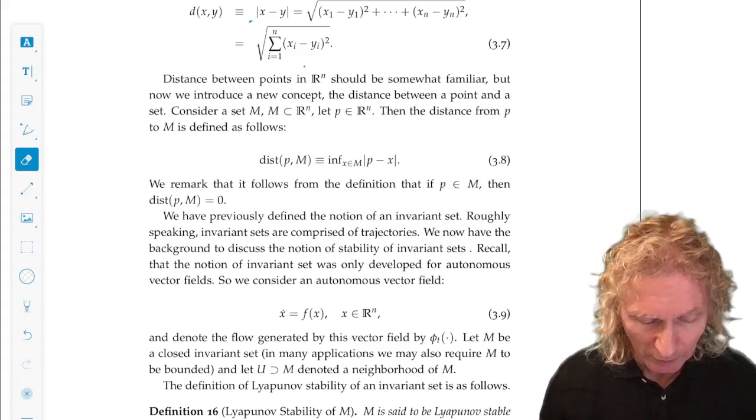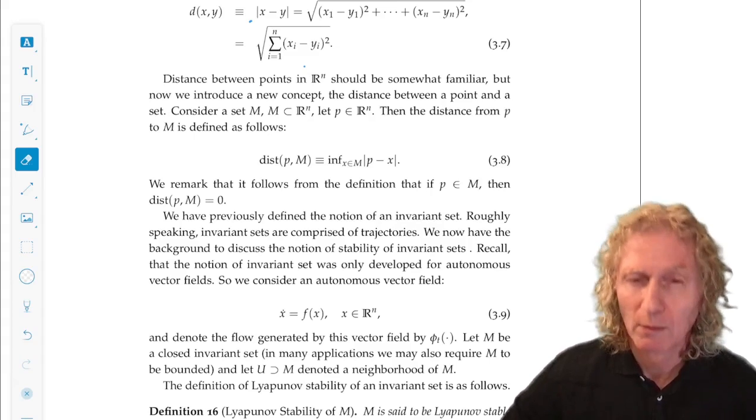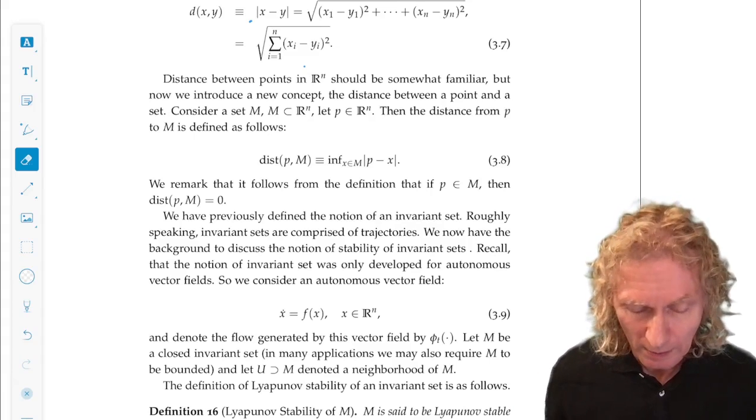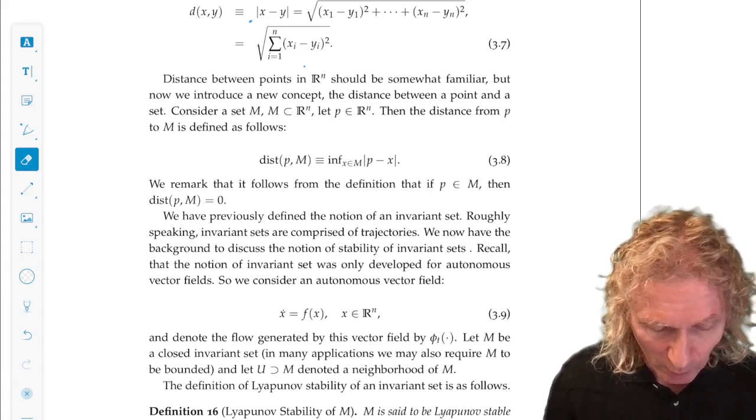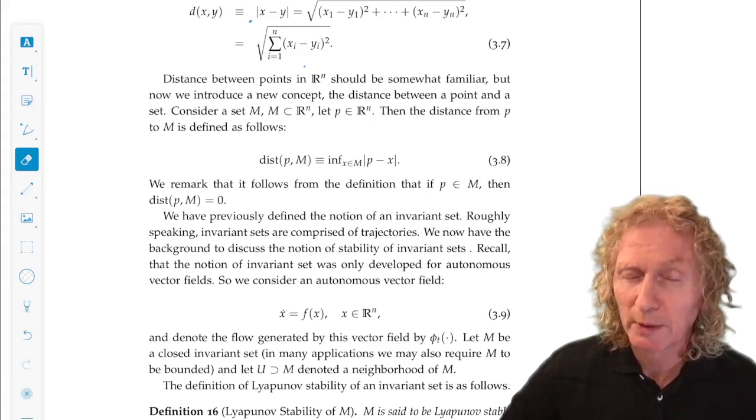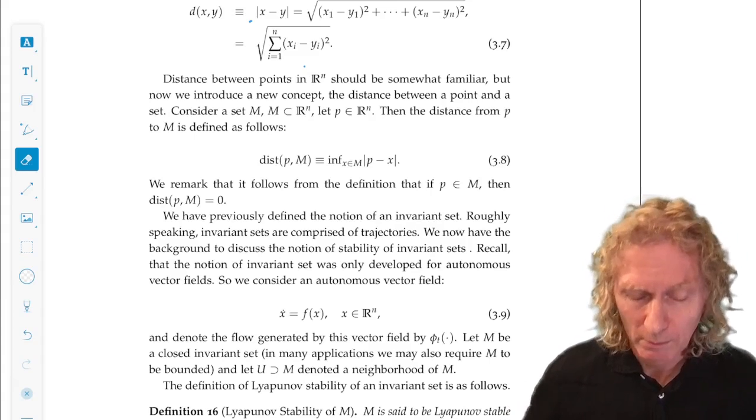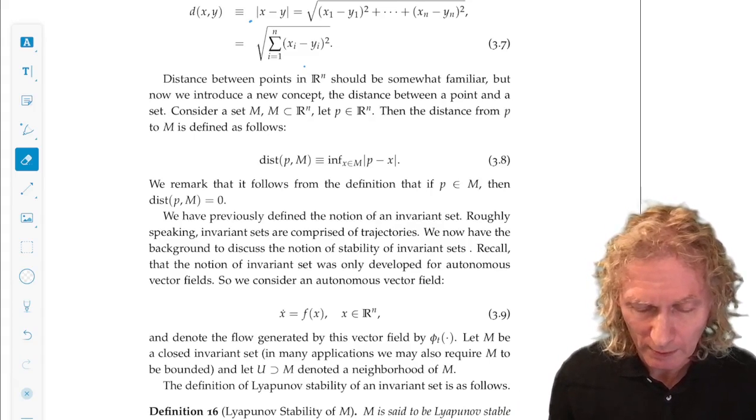Now asymptotic stability is going to be what you might guess. It's Lyapunov stable, but you start in the neighborhood, you stay there, but you actually get closer and closer and closer to the invariant set. And that's where we need this distance measure.